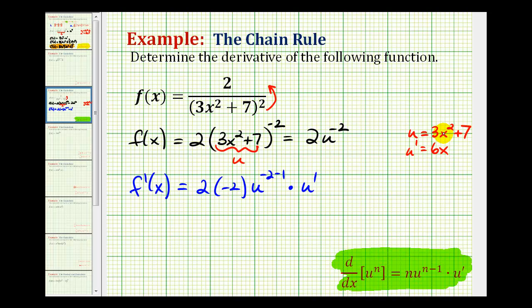So now we'll perform these substitutions into our derivative function. So f prime of x is going to be equal to negative four, and then we'll have, instead of u to the negative three, we'll have three x squared plus seven to the negative three, and instead of u prime, we'll have six x.